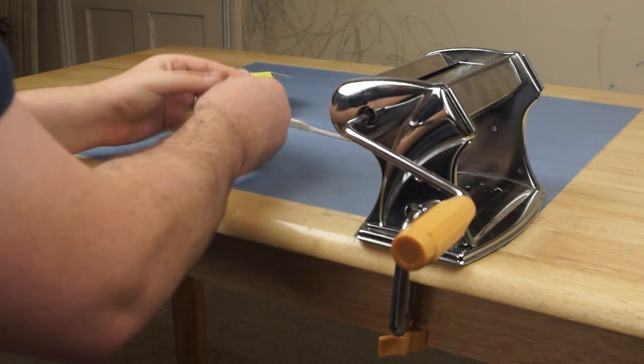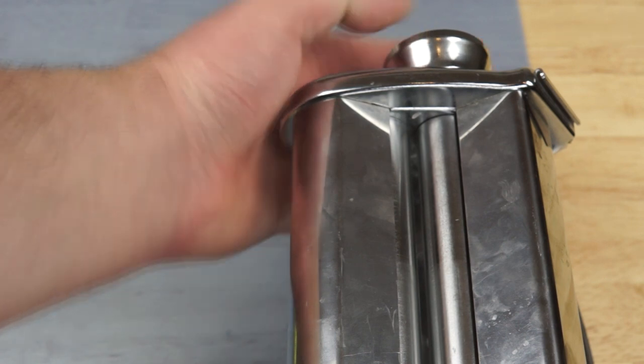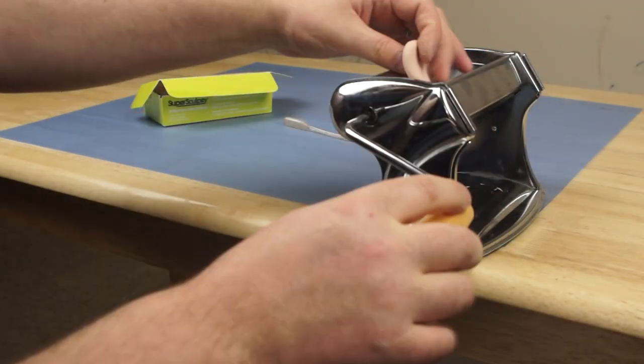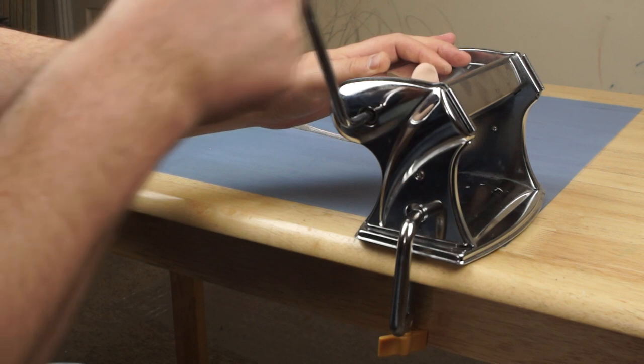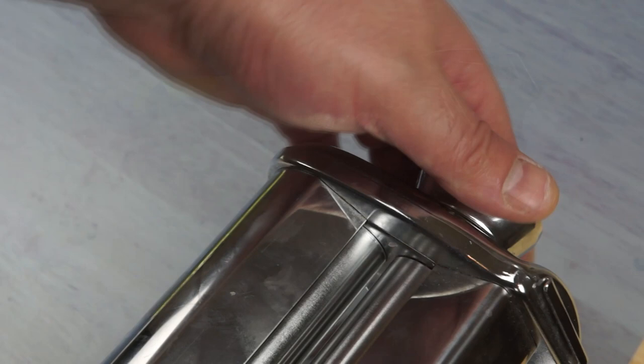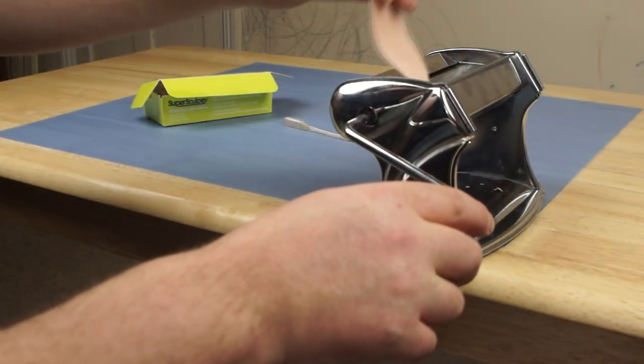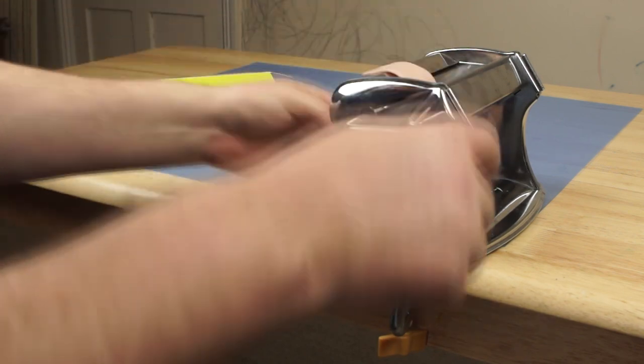To roll it out, I used an old pasta machine. And I set it to its widest setting and then gave my little block a run through. This gives it a uniform thickness. And then to get it to finish size, I used the first widest setting on the machine and ran it through again.